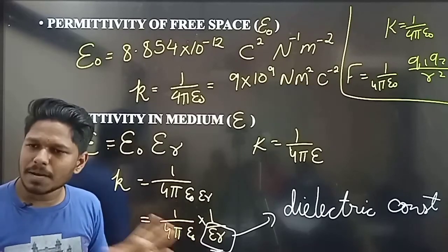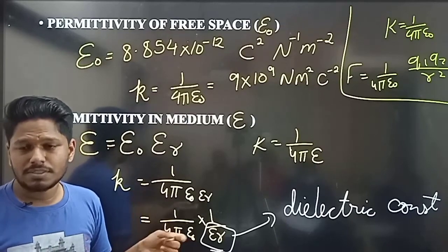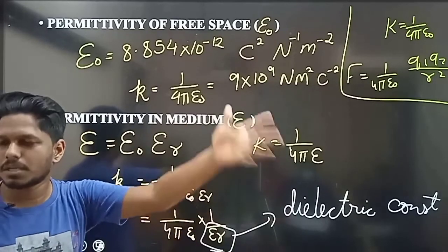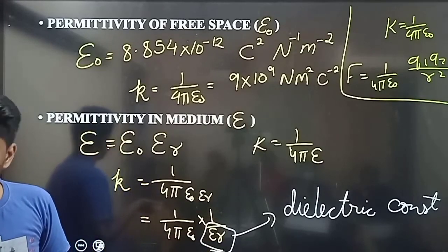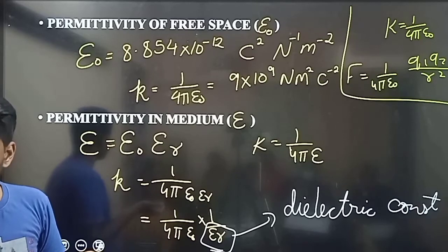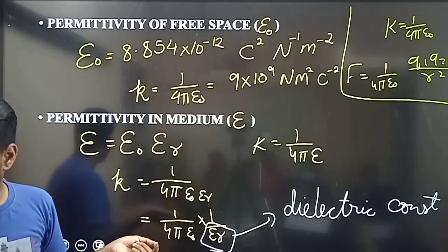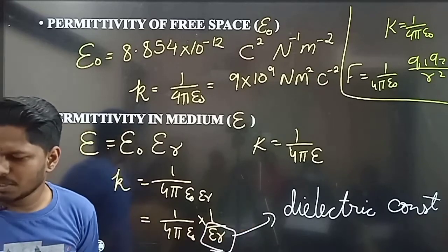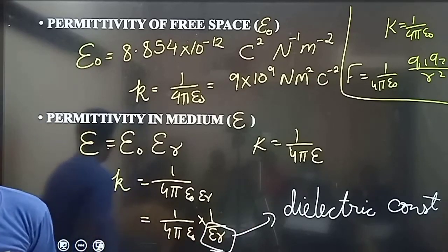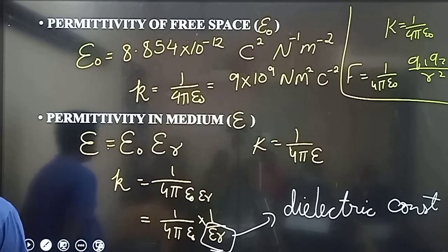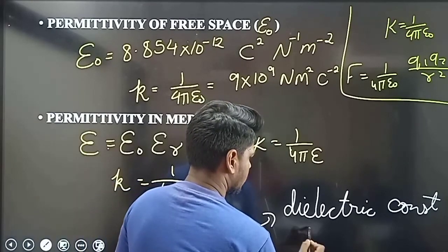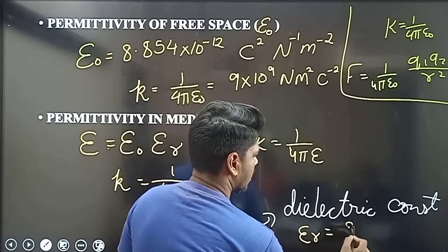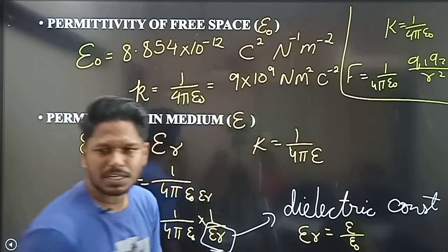In a medium, the value of K is less. The field is less and the intensity is less. It's a constant value — the dielectric constant. Relative permittivity is a ratio: epsilon divided by epsilon naught. That's why it's called relative permittivity.